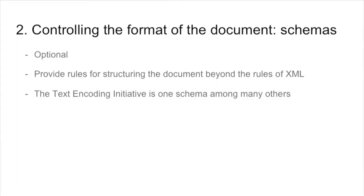So to compensate this freedom you have other technologies. Like when you're entering data into a database you need some kind of form that will help you put the right data in the right place. It's the same thing with XML. You have some data used to control the format of the data you're entering, and this is called schemas. Schemas provide rules that go beyond the simple do-not-overlap rule of XML. The text encoding initiative is a particular schema. There are other schemas like the EAD for finding aids, and so on.